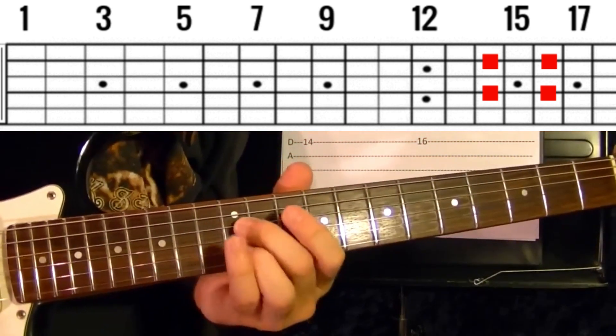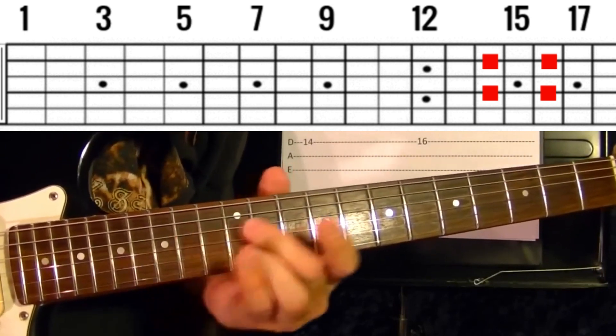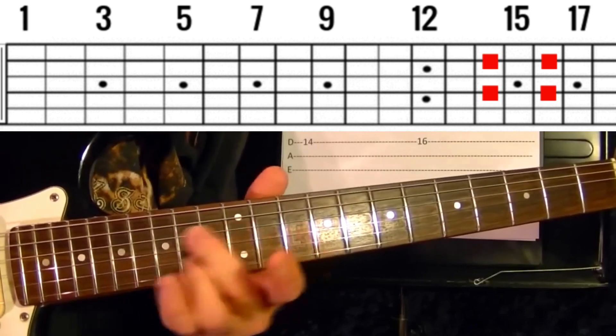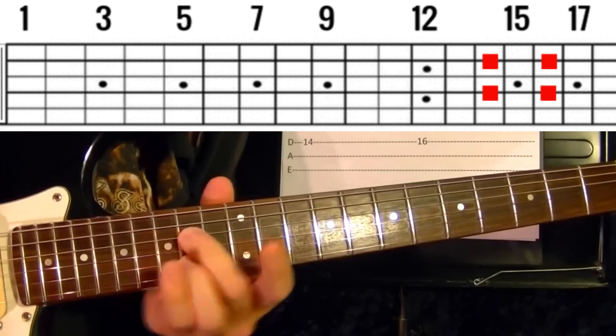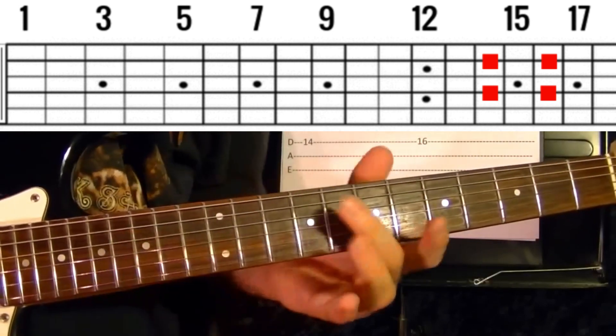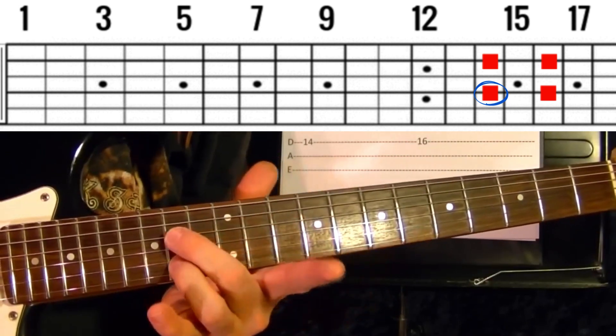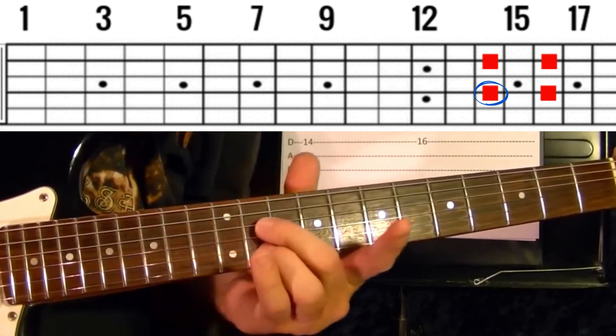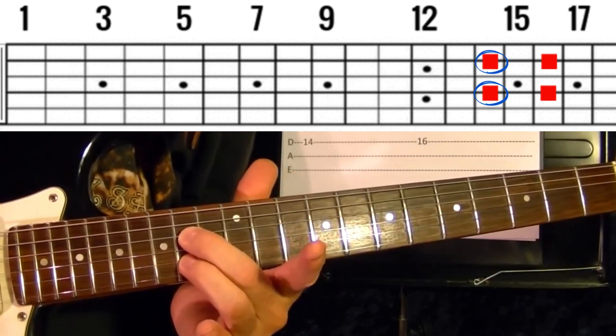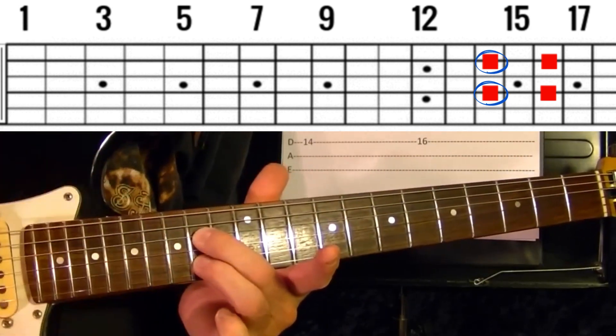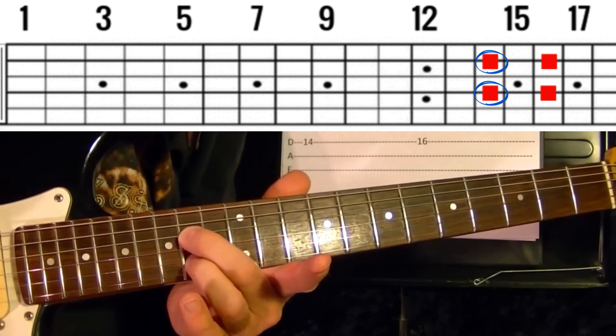Next part is this: slide up to the 14th fret on the fourth string, then the 14th fret on the second string, pick it with your finger twice. Do that six times.